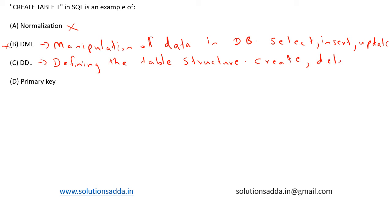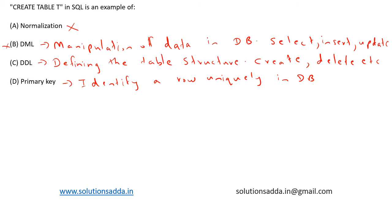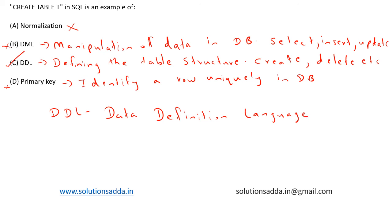Option D, primary key, is a database constraint used to uniquely identify a record in a table — it identifies a row uniquely in the database, so this is also not the right answer. Based on the options, option C — DDL, Data Definition Language — is the correct answer.